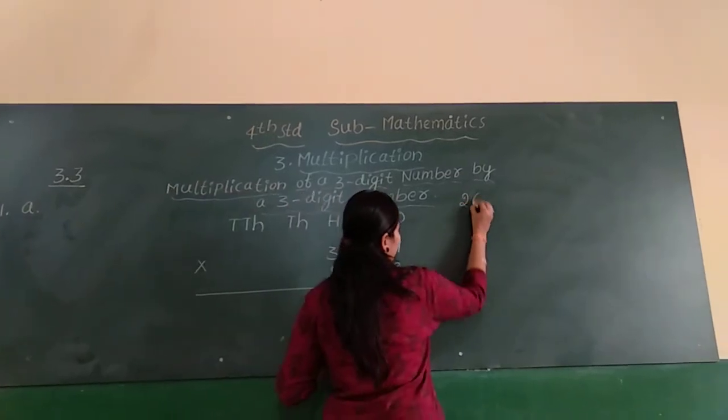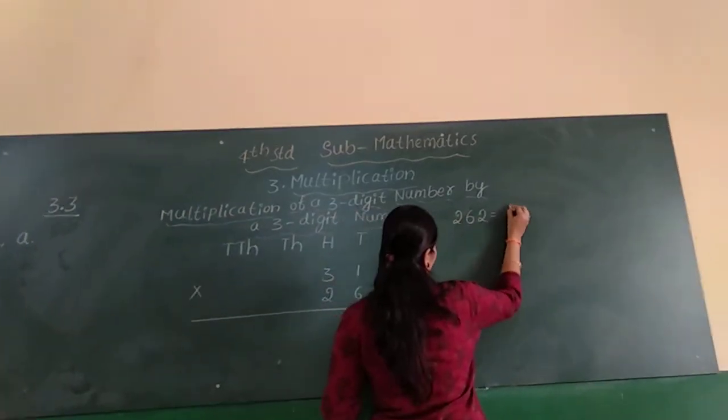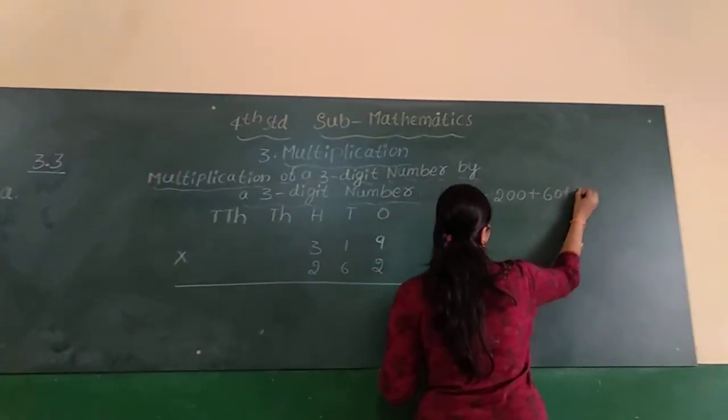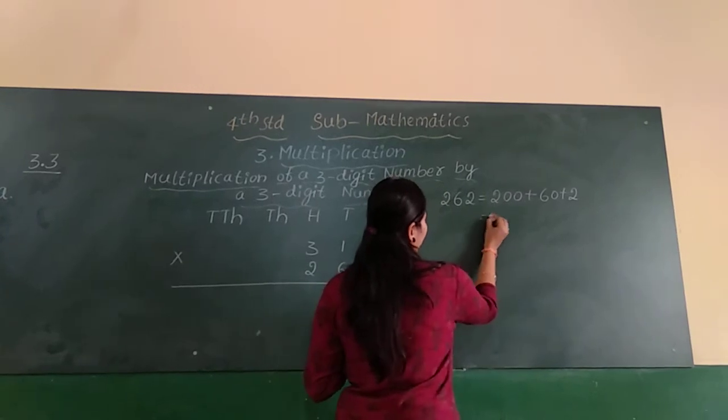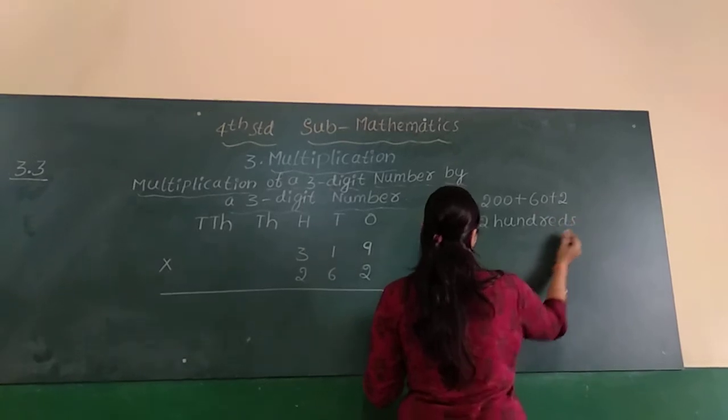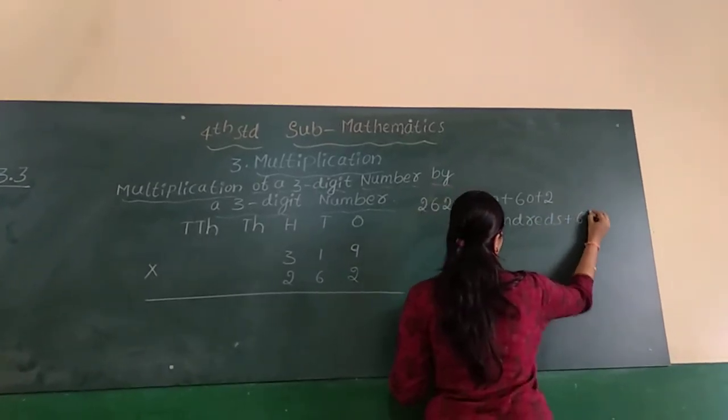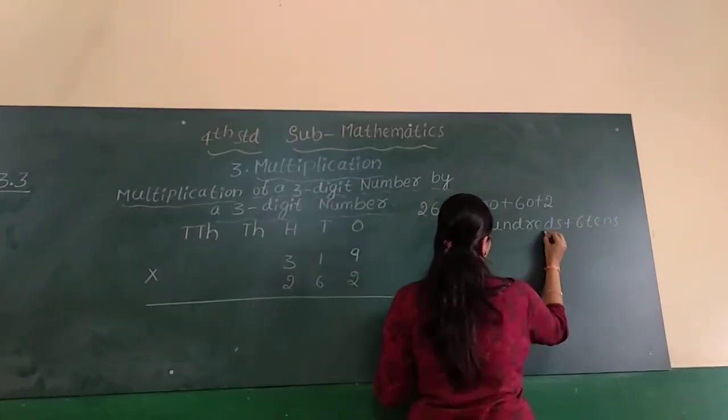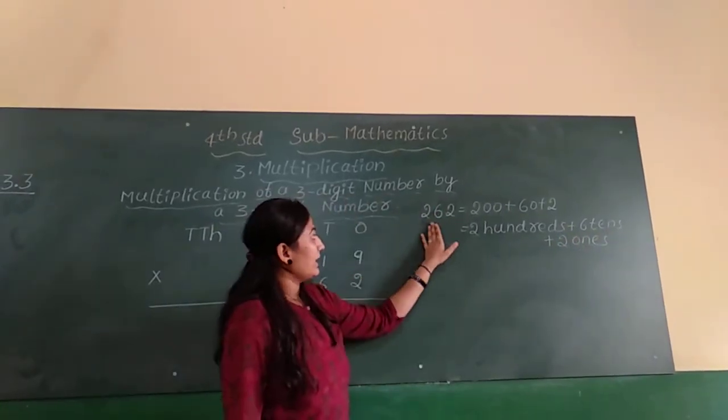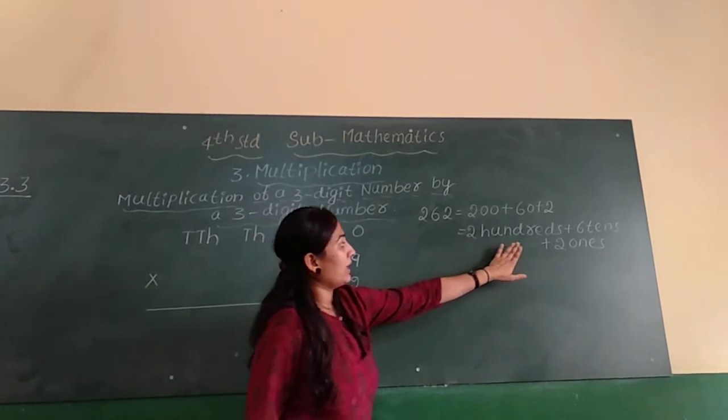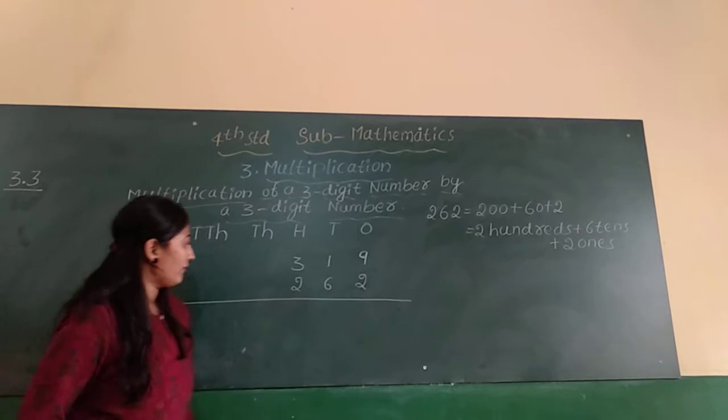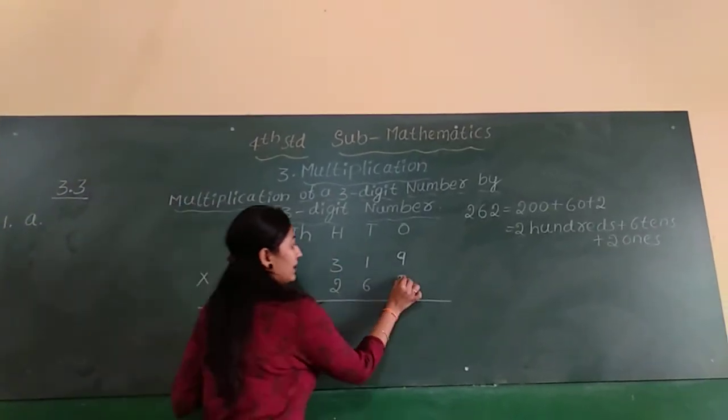First see here, 262 can be written as 200 plus 60 plus 2, which means 200 plus 6 tens plus 2 ones. So first we start from the ones.